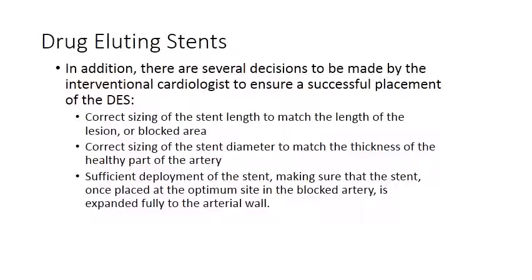There are several decisions to be made by the interventional cardiologist to ensure successful placement — sometimes considered as important as, or more important than, the type of stent and drug chosen. The stent must be correctly sized in length to match the lesion, the diameter must match the healthy part of the artery, and the stent must be sufficiently deployed at the optimum site and expanded fully to the arterial wall. The type, length, diameter, and surgical execution will all affect the patient outcome and whether re-stenosis will occur.